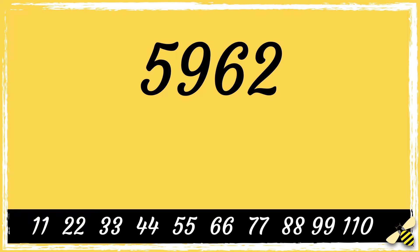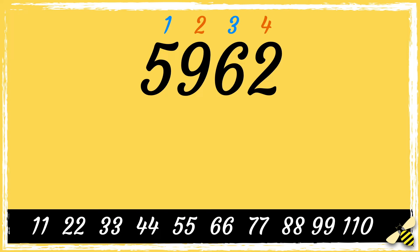Let's break this down — we need to find the difference between the odd and even place digits. When we say odd and even, we don't mean the actual digits but the place where the digit sits. So for example, the digits 5 and 6 sit in odd places, and the digits 9 and 2 sit in even places.